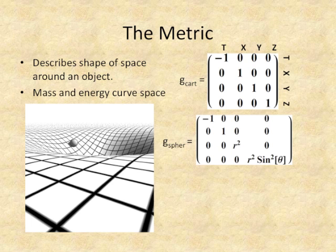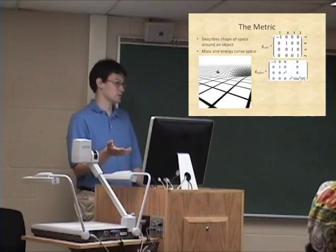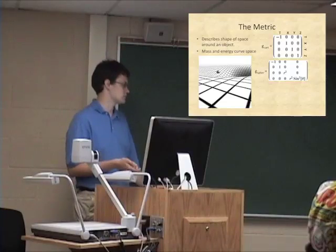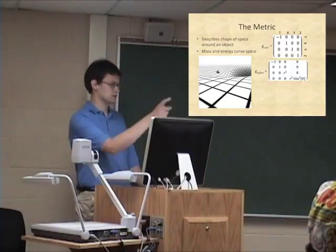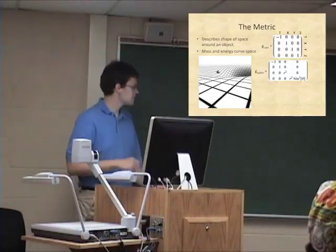The Cartesian metric is pretty simple. The spherical is also describing flat space, but it looks a little more complicated just because it's based on a spherical coordinate system, so all the points are points on a curved sphere.